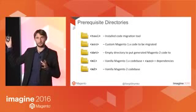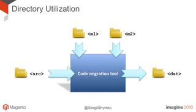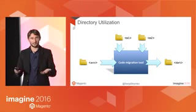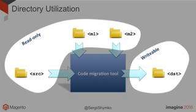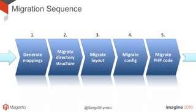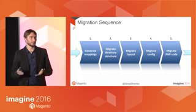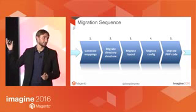To help you remember these directory names — the tool accepts the source directory as input, generates output in the destination directory, and uses the Magento 1 and Magento 2 directories just to look things up. The source, M1, and M2 directories are read-only; the tool is not going to modify your source code. It will just read, analyze it, and generate output in the destination directory. Now we're ready to actually run the migration. The whole migration process is a five-step process.